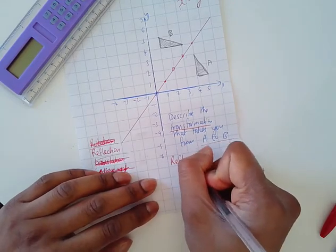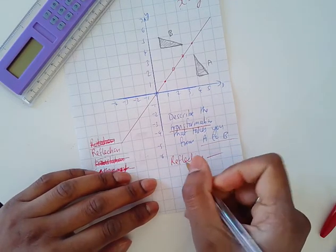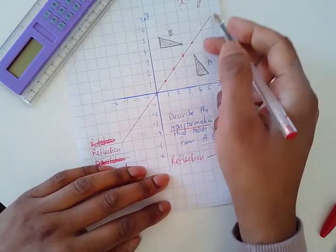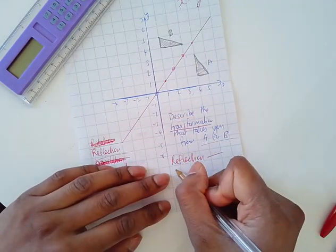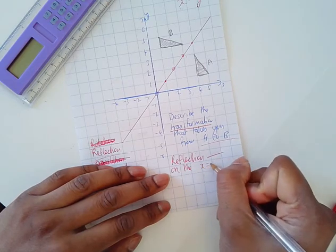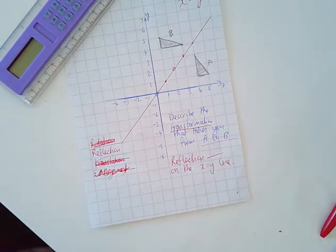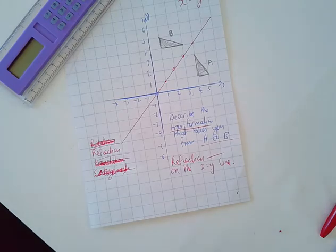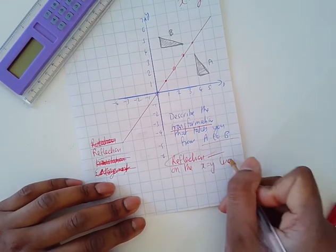Specify what the line is: it's the reflection on the x equals y line. That only carries two marks - one for this and one for that.